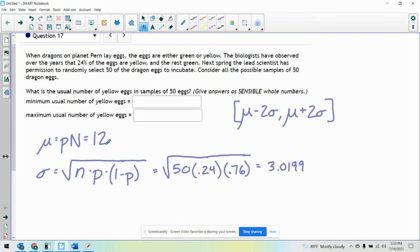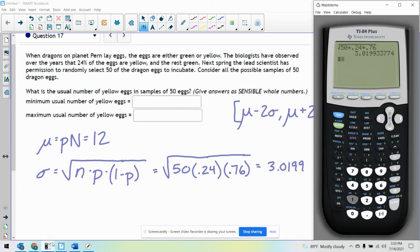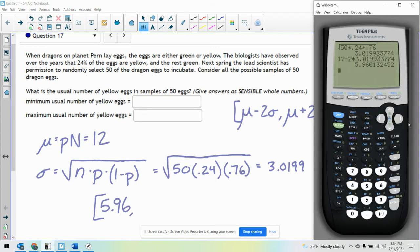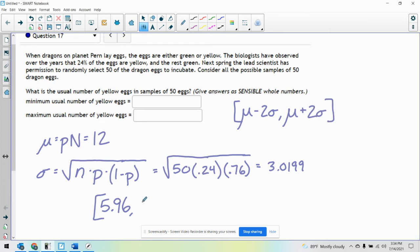So I'm just going to take my mu, 12, minus 2 times sigma. We get 5.96. And then I will change that minus to a plus and I get 18.03. So they often round here, but it says give answers as sensible whole numbers. This is really close to 6, this is really close to 18. So our answers are from 6 to 18.